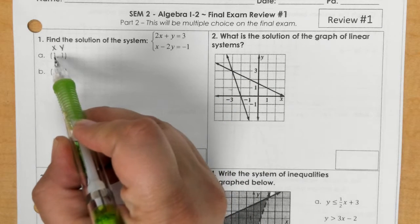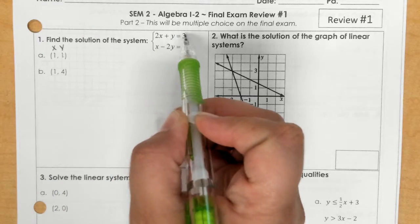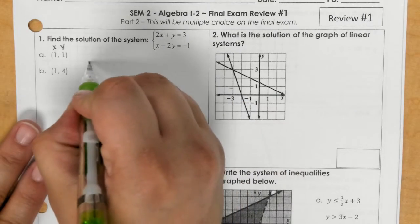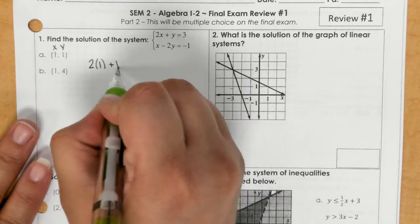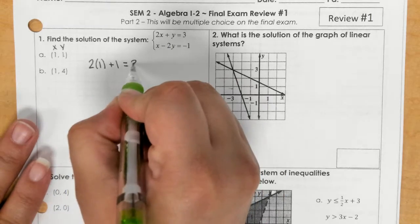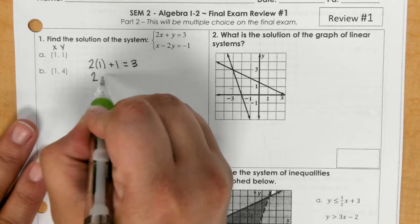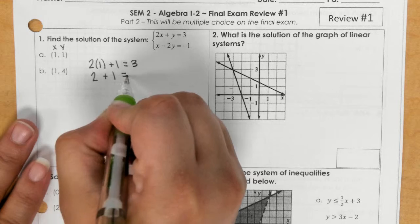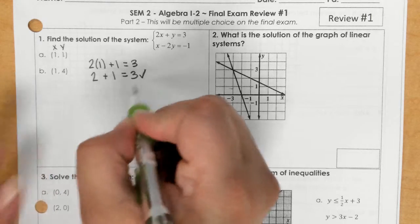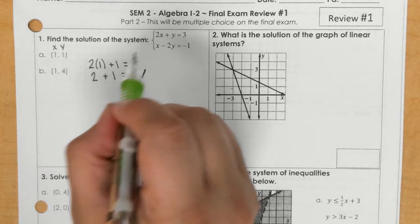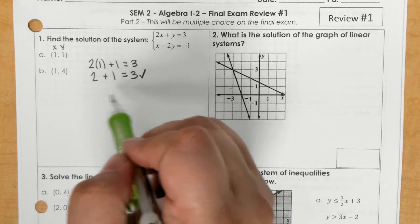So for example, if I plugged x is 1 and y is 1 to the top equation, it would look like 2 times 1 plus y is 1 equals 3. Now, if I simplify that, 2 times 1 is 2. If I add 2 and 1, I do get 3. So we know that 1, 1 is a solution to the top equation because when we plugged it in, it worked out perfectly.